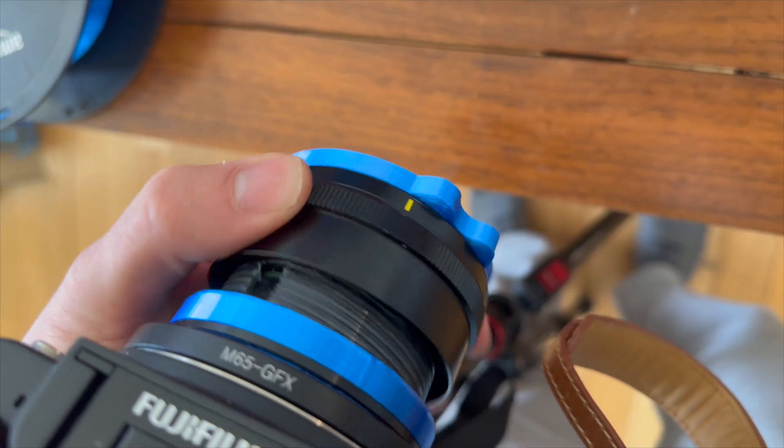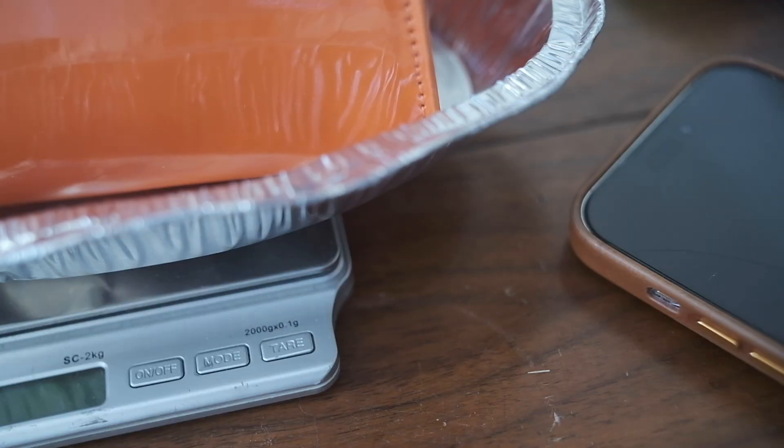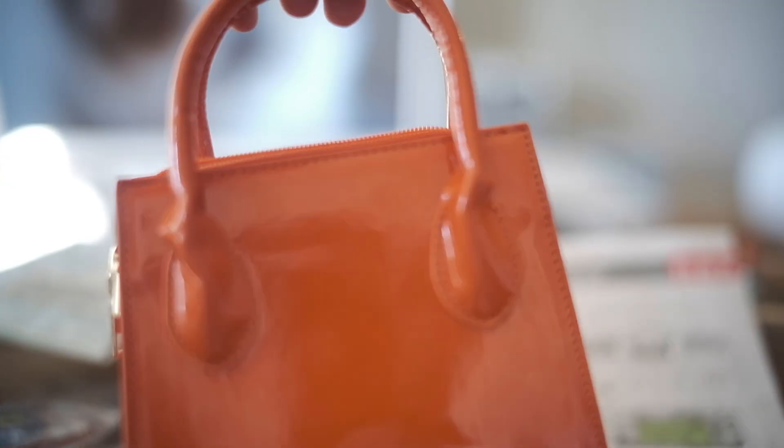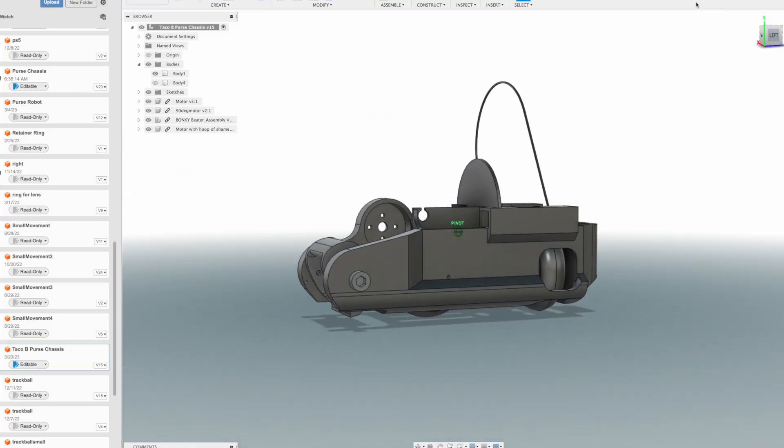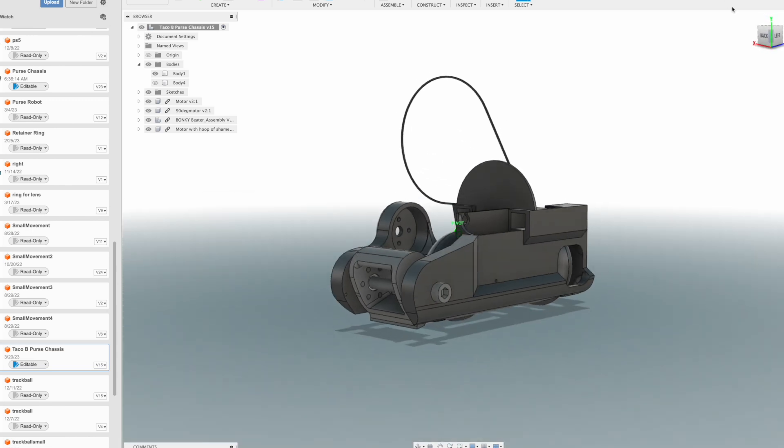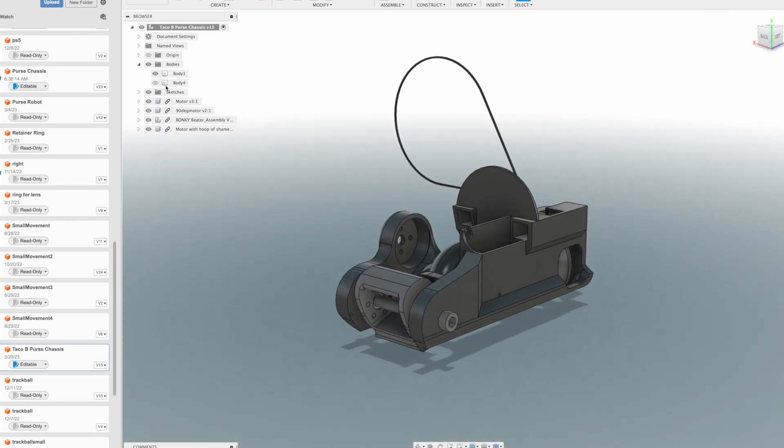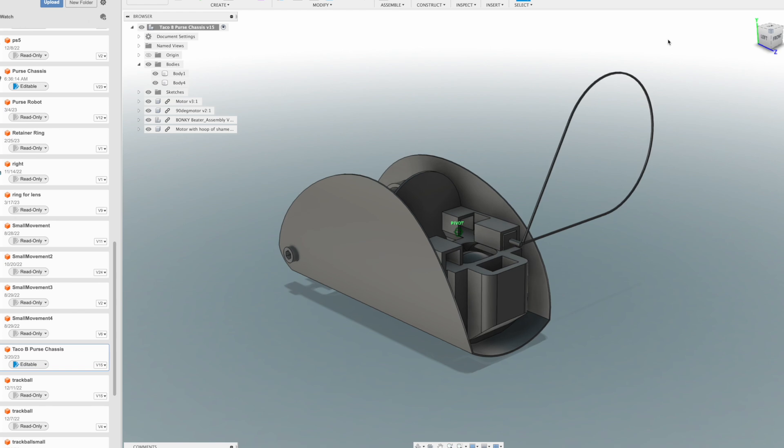Ah, my homemade lens fell apart. So anyway, this does mean I need to reconsider my premise. I can either rebuild the purse out of a lighter material, or I can find another shell to put around this chassis. Shell? Huh? Tacos! We're going to go with tacos.